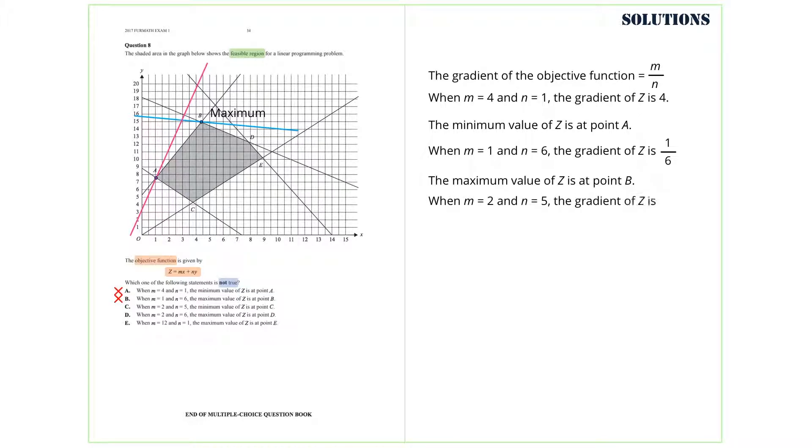Option C. When M equals 2 and N equals 5, the gradient of Z is 2 over 5. Here is a line that has gradient 2 over 5. We move it up and the minimum value of Z occurs at point C. So, this option is true as well, so we can cross it out.